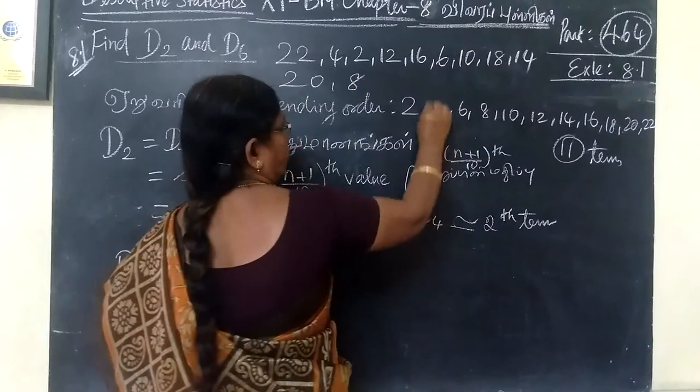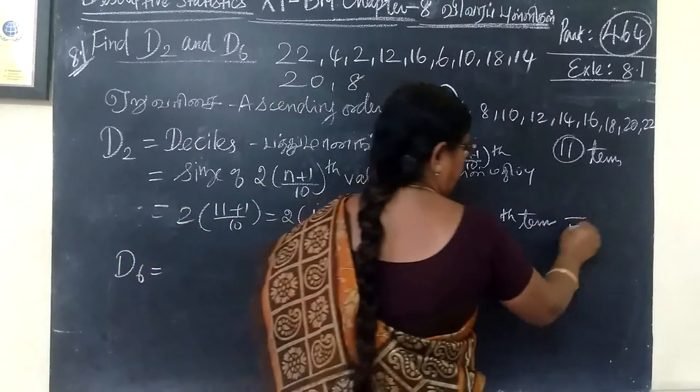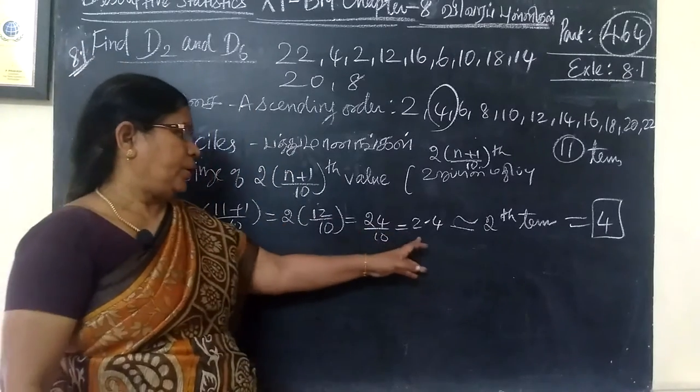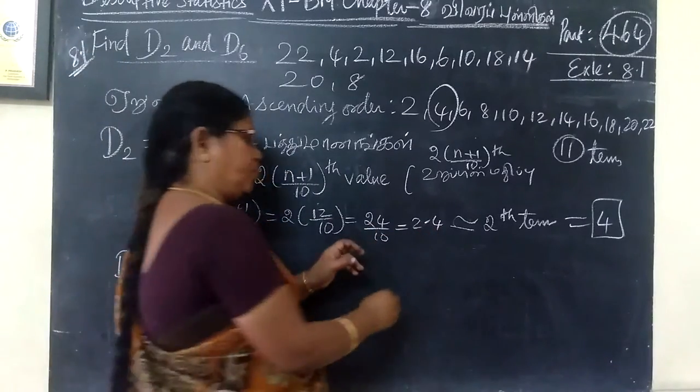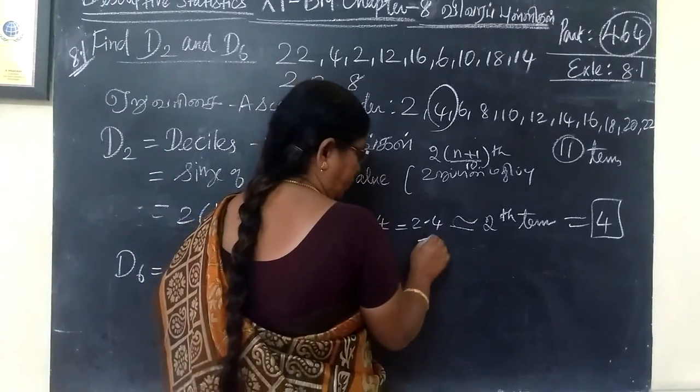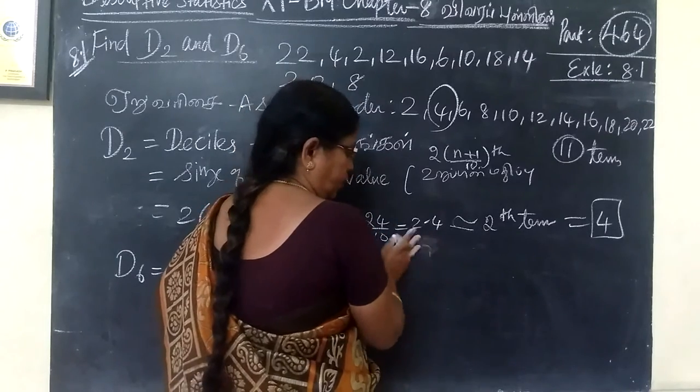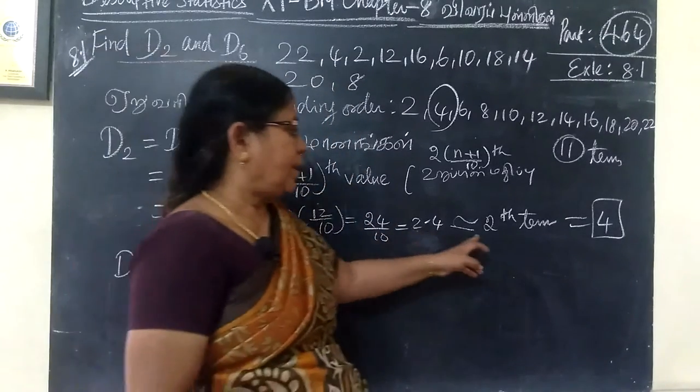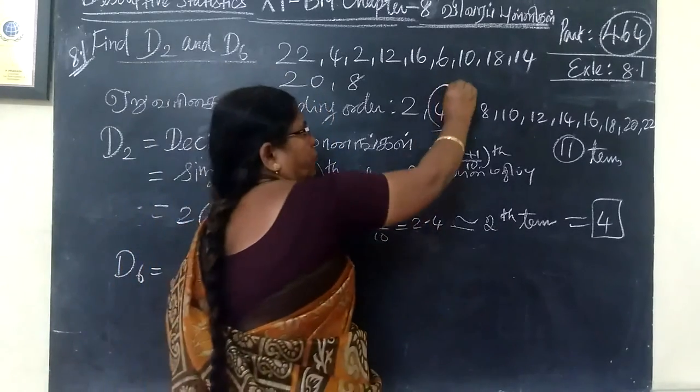Second term is 4. So the answer is 4 for this. 2.4, you are considering approximately 2nd value. 2nd value is 4.